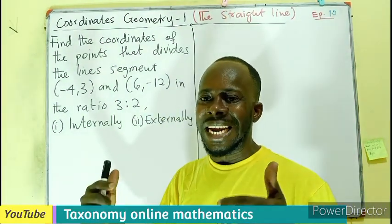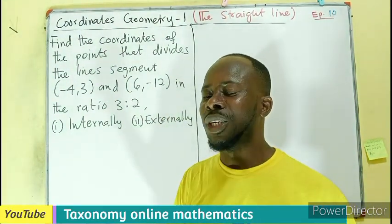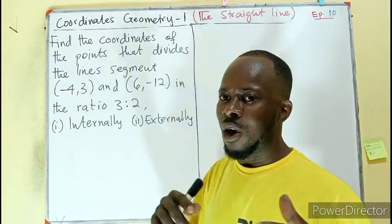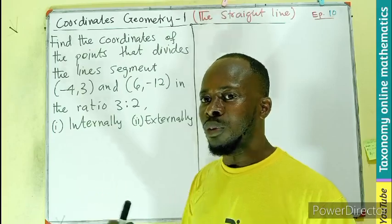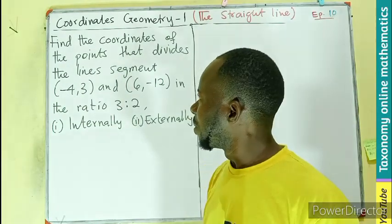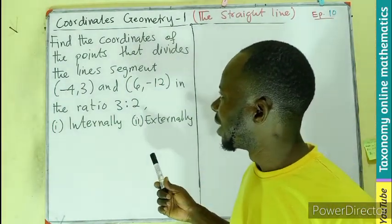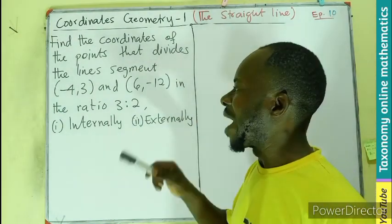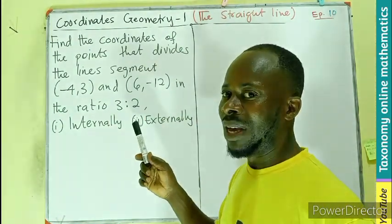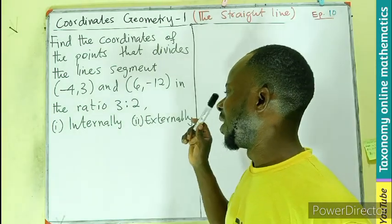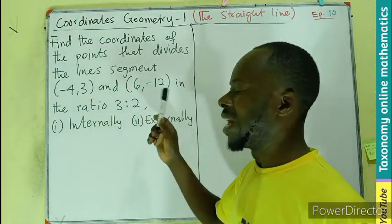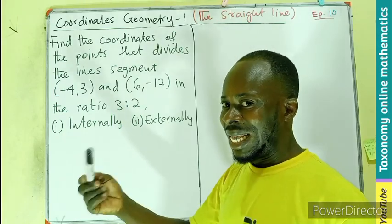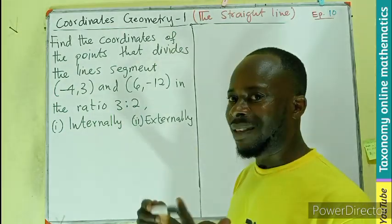We are on the internal and external division of a line segment. That was episode number 9, how we derive the formula. We want to put the formula to test by finding the values here. So, find the coordinates of the points that divide the line segment (-4, 3) and (6, -12) in the ratio 3:2, (1) internally, then (2) externally.